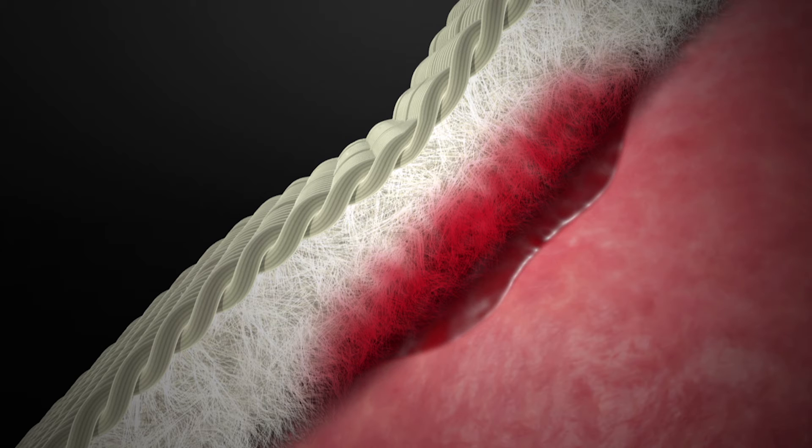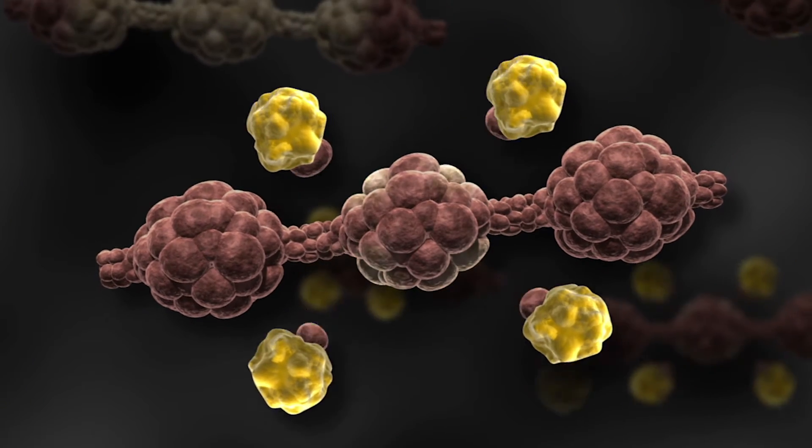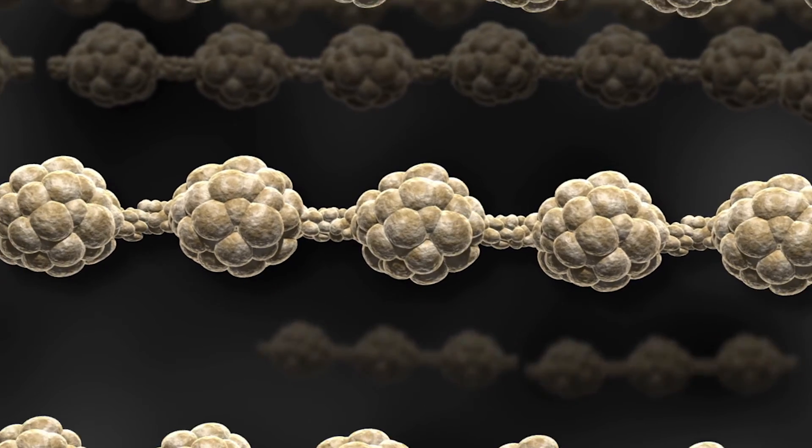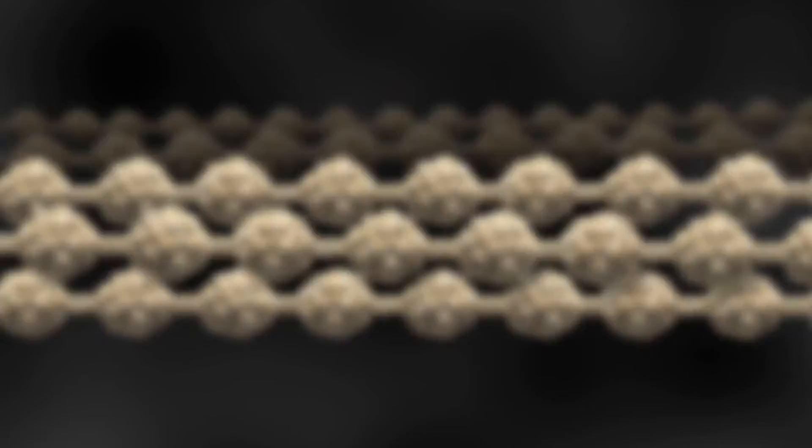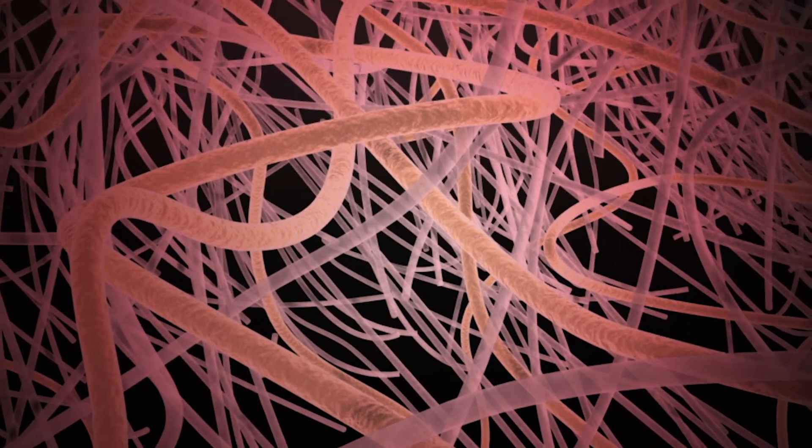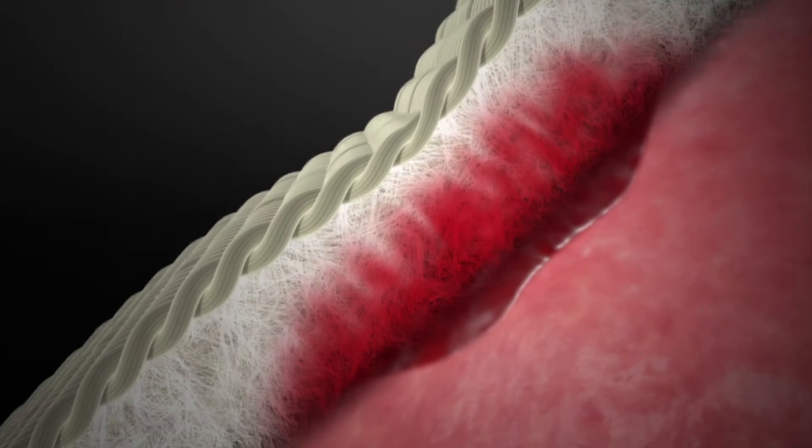Upon contact with blood, the clot formation process begins. Once hydrated, the thrombin cleaves fibrinogen, initiating the conversion of fibrinogen into fibrin monomers. These monomers then polymerize, leading to the formation of fibrin strands. This activation results in clot formation at the bleeding surface within the patch.